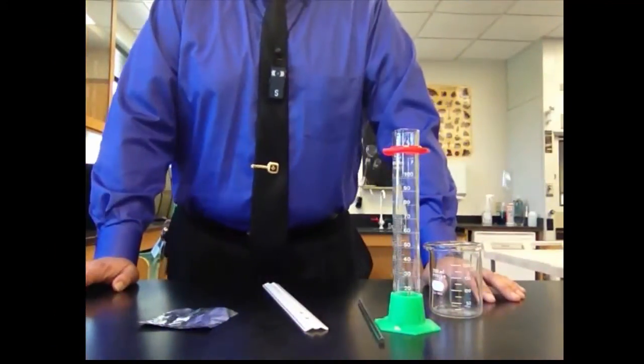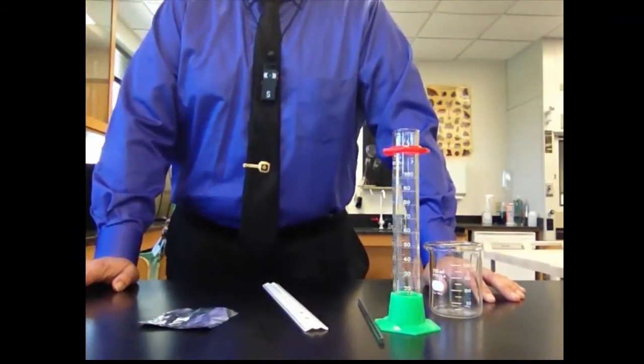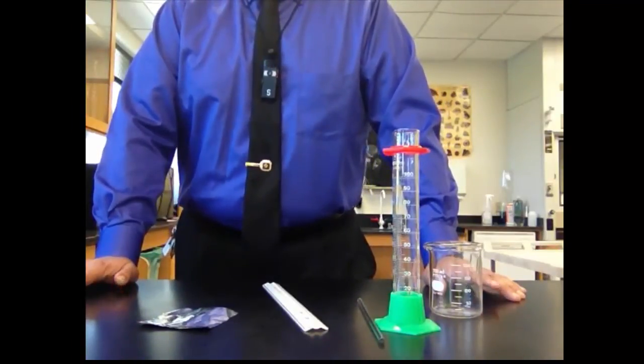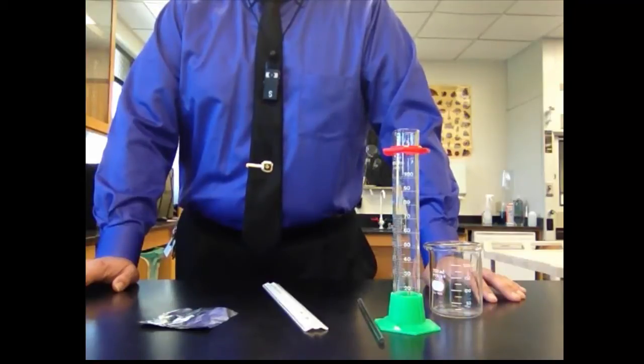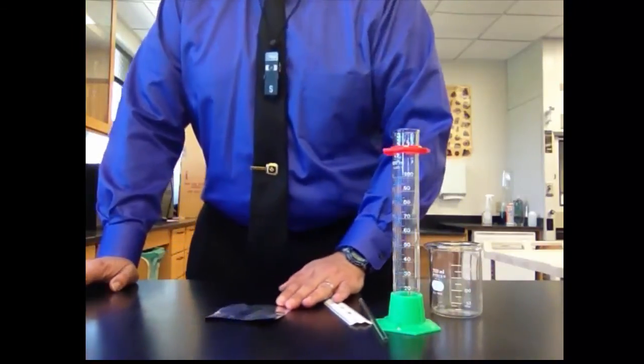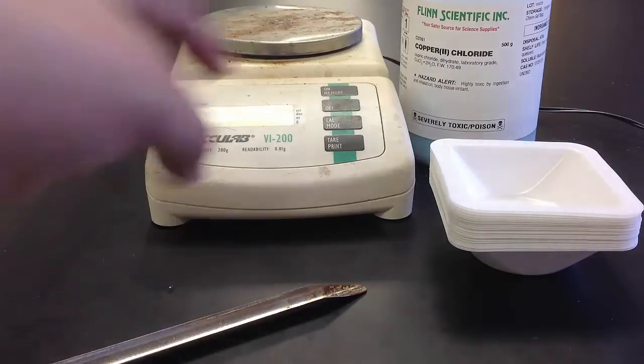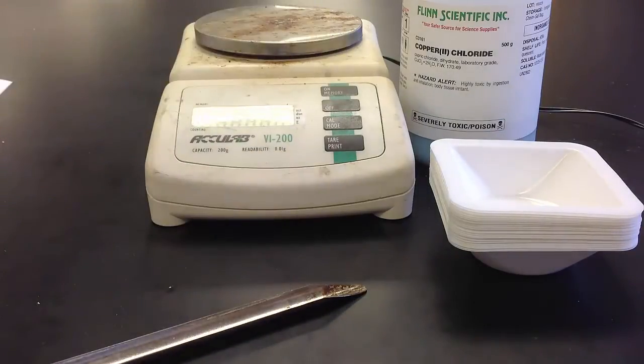For the second part of this experiment, we're going to be doing a chemical reaction with the copper chloride. And you're going to need to weigh out about five to seven grams. Now, I'm going to show you how to do that using the balance in the most efficient way possible. Just to give you a quick rundown on how to properly weigh something in a nice, convenient manner. We've got our balance here. Make sure that your balance is on.